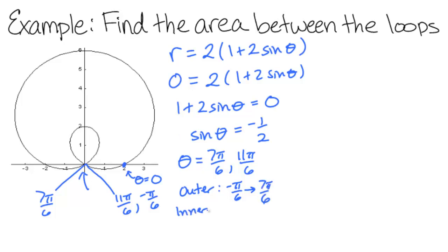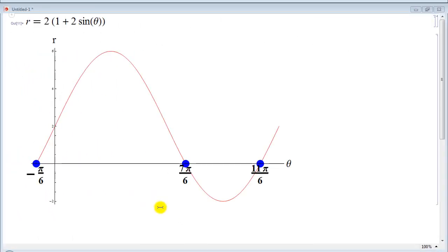And then the inner loop occurs as we go from 7π over 6 to 11π over 6 when it exits the inner loop. Note that this is the graph of r equals 2 times 1 plus 2 sine theta in an r-theta plane. So what you see here is the graph starting at negative π over 6. That's where it crosses the r equals 0 line. And then it comes up and back down, and it crosses again at 7π over 6. That's the same section that creates the outer loop. From 7π over 6 to 11π over 6, r is negative. This is the section that creates the inner loop. And then this is the little bit that takes it back to the beginning.